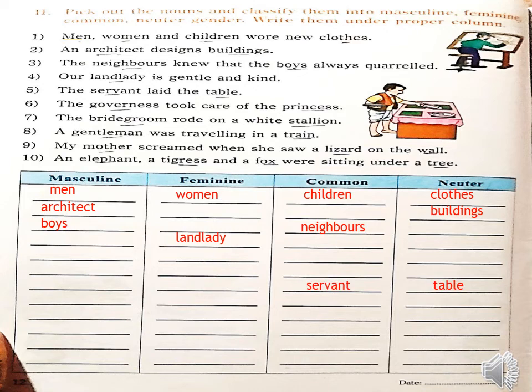Sentence number six: The governess took care of the princess. The bridegroom rode on a white stallion. Bridegroom and stallion are both masculine gender. A gentleman was travelling in a train. Gentleman — masculine gender. Train — neuter gender.